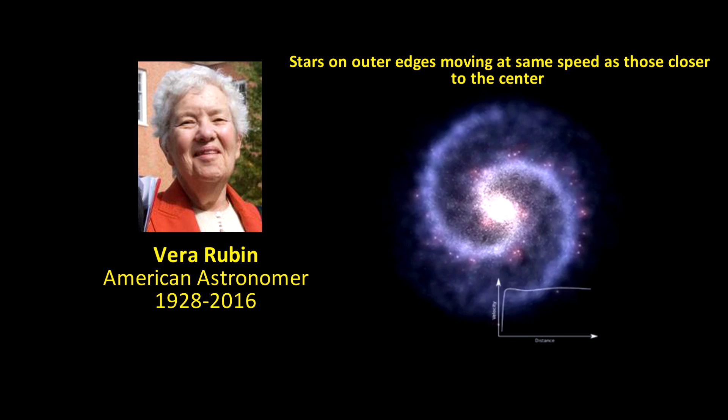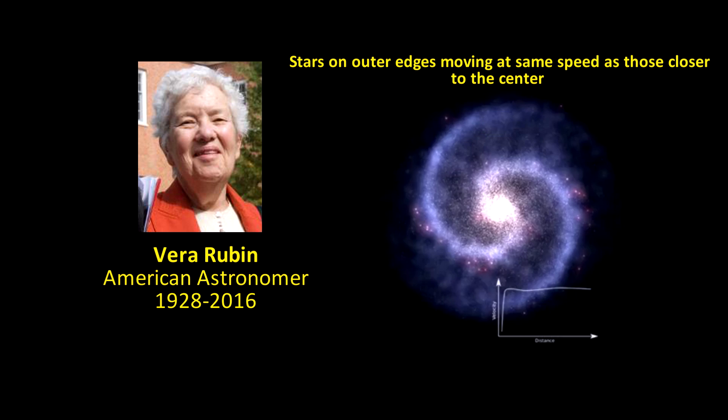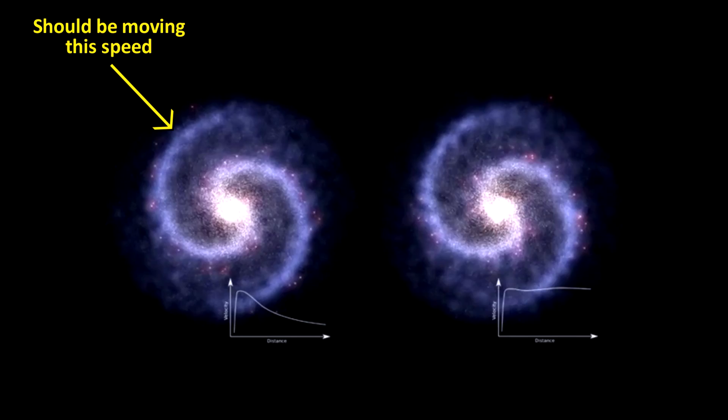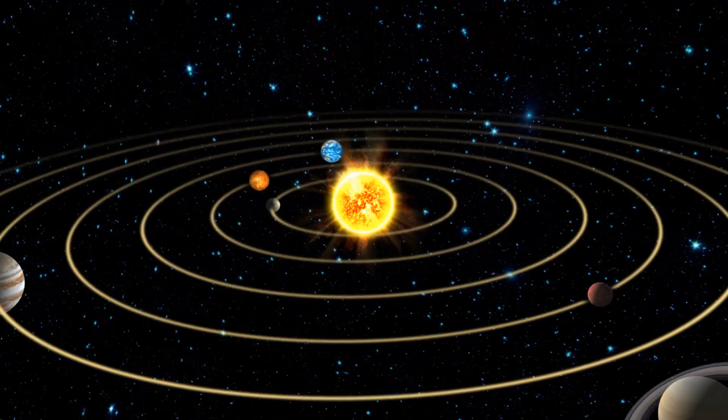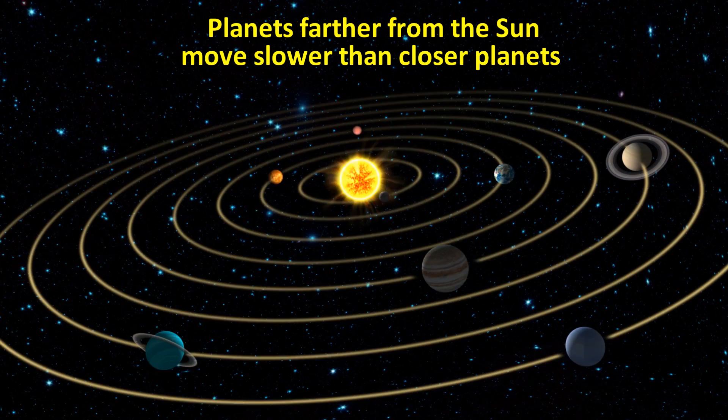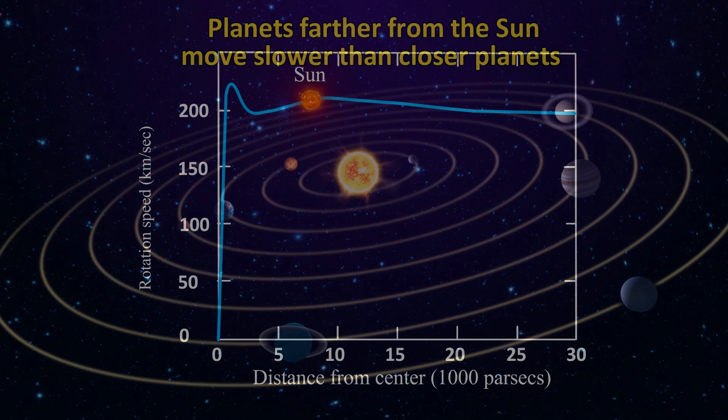As I showed in a previous video, Vera Rubin in the 1970s verified that stars in the outer edges of galaxies are moving around the galactic center at about the same speed as those closer to the center. But according to the laws of gravity, they should be moving much slower because the effect of gravity goes down by the square of the distance. This can be seen in the motion of Earth and all the planets in our solar system.